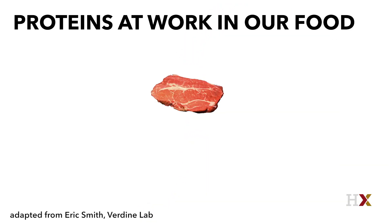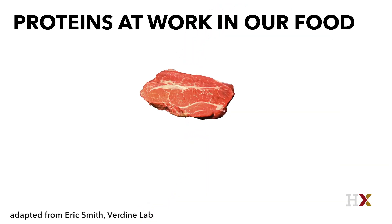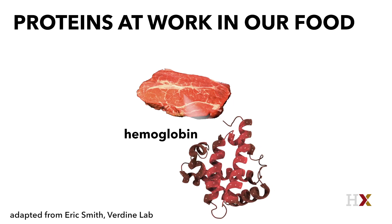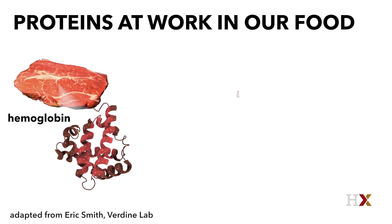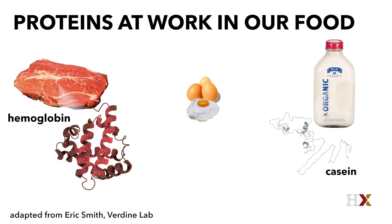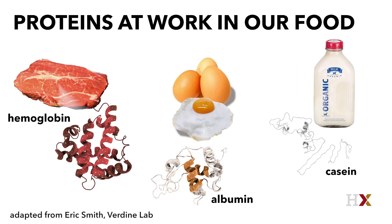Now I want to turn to the third major component of food, which is proteins. Proteins occur in many of the things that you eat. For example, if you look at a piece of steak, the red color in steak comes from hemoglobin, at least in part, which is a protein constituent of blood. Milk actually has a protein in it called casein. Albumin is a protein component of eggs, which is responsible for the remarkable properties of eggs when you heat and cook them — something we will talk about extensively in this class.